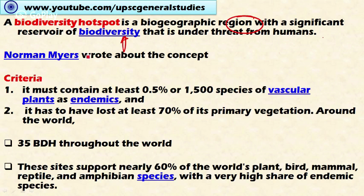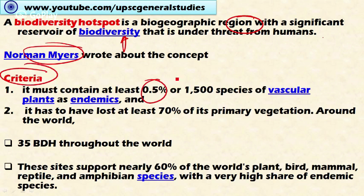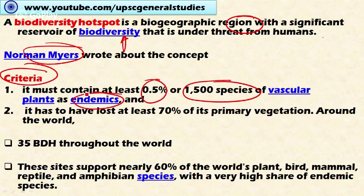This concept was given by British ecologist Norman Myers. Two important criteria are available for considering an area as a biodiversity hotspot. The first criteria is that the area must contain at least 0.5 percent — or 1,400 species — of vascular plants (that is, higher plants) as endemic. Endemic means species which are unique to that area and not present in any other part of the world.